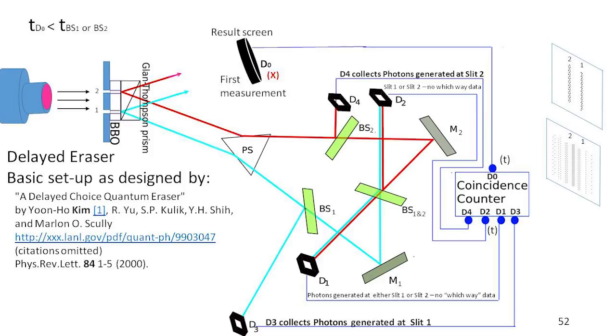Created those two red lines. So the red one with the arrow on it goes up to D0, and that's the result screen. That's where you're going to get a diffraction pattern or a two bar pattern, a particle pattern.